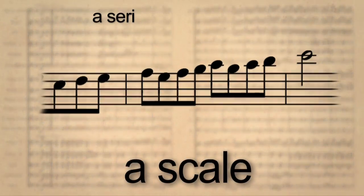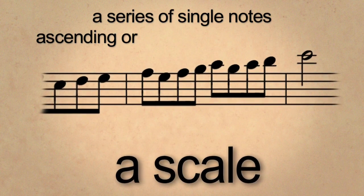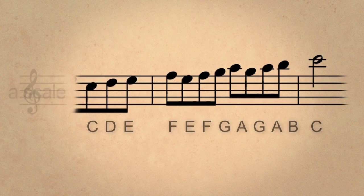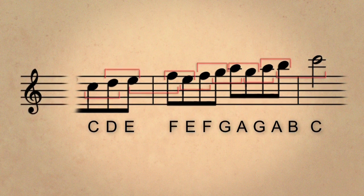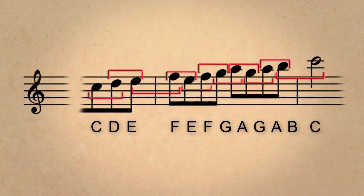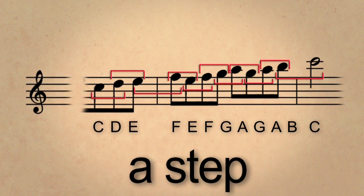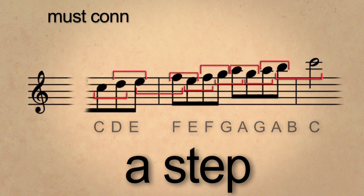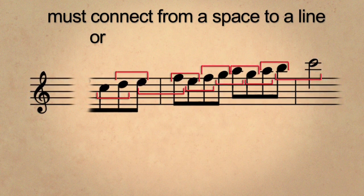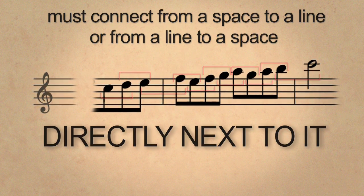A scale is a series of single notes ascending or descending stepwise. Any note that connects to the previous note without skipping a letter in the naming of the note is a step. The notes also must connect from a space to a line or a line to a space directly next to it.